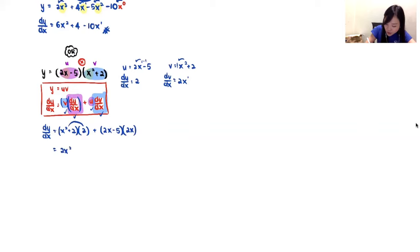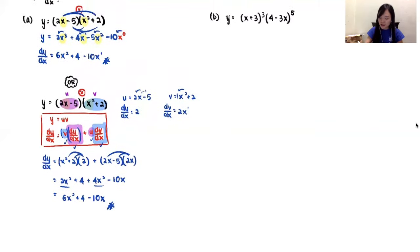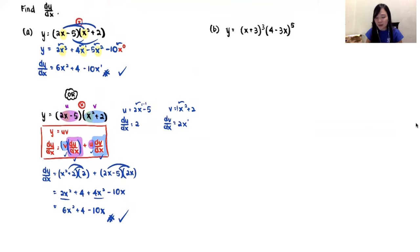Combining: 2x² + 4x² = 6x², plus 4, minus 10x. So dy/dx = 6x² − 10x + 4. Notice — using the product rule I get this answer, and using the expansion method I also got this answer. Both methods give back the same answer, so the formula works. Hopefully you understand. Let's look at part b now.